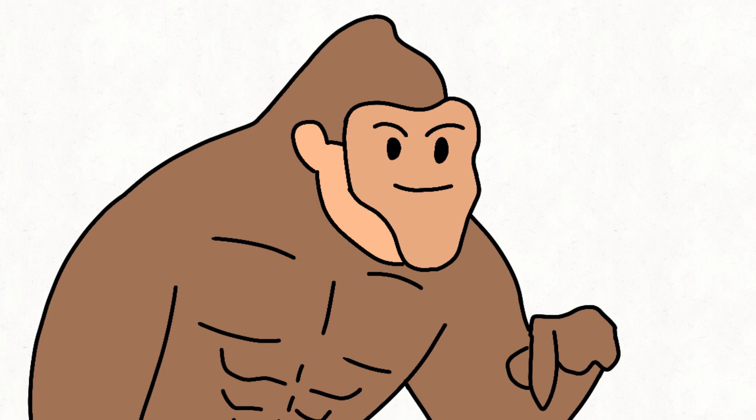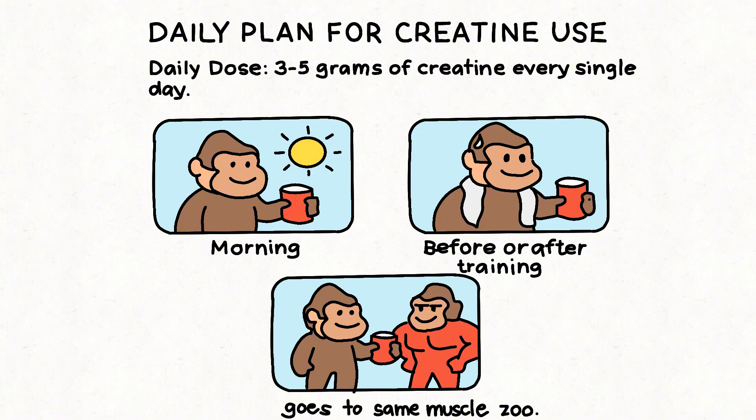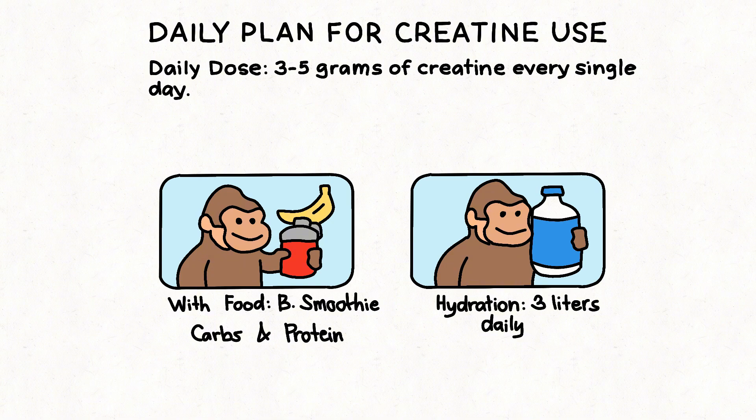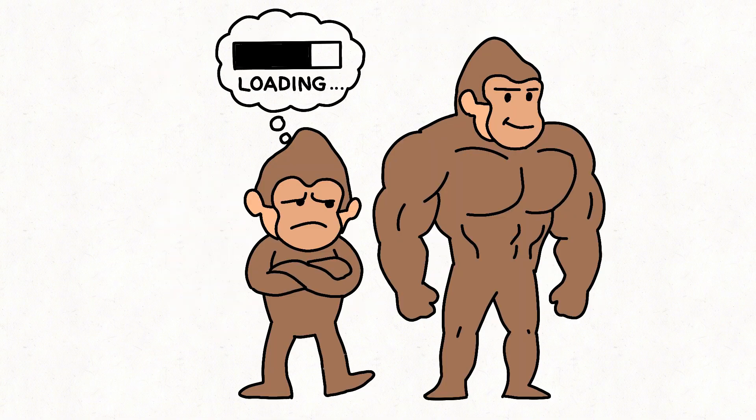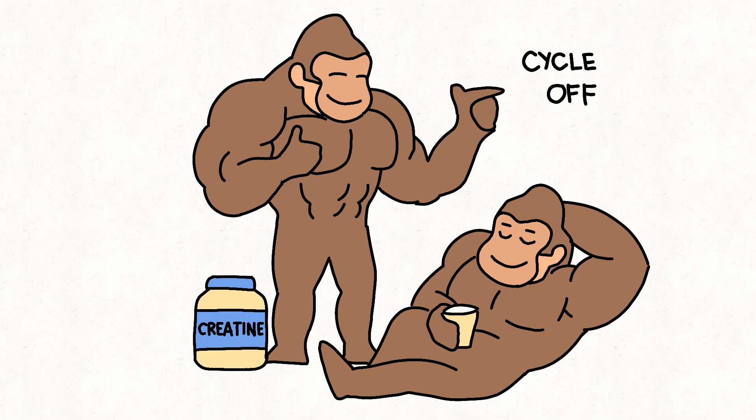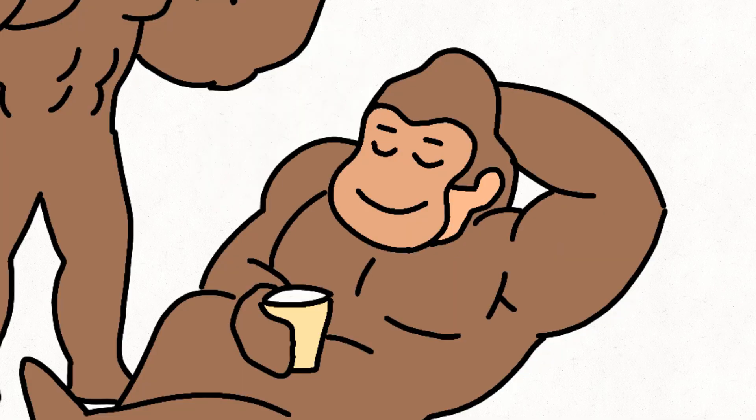Monkey keeps it simple. No need for complicated jungle rituals. Daily dose: 3 to 5 grams every single day. Timing: anytime. Morning, before or after training. It all goes to the same muscle zoo. With food: works best with carbs or protein. Banana or smoothie perfect. Hydration: at least 3 liters of water daily. Keep cells happy and full. Monkey doesn't need a loading phase. That's just impatient monkey tricks. After 1 week of daily use, muscles are full anyway. Monkey doesn't need to cycle off. Creatine's safe for long term, even for lazy Sunday apes.